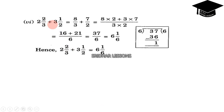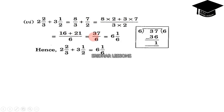Next: 2 and 2 by 3 plus 3 and half. Converting: 2 and 2 by 3 equals 8 by 3 (since 3 into 2 is 6, plus 2 is 8). And 3 and half: 3 into 2 is 6, plus 1 is 7, giving 7 by 2. LCM of 3 and 2 is 6. So 8 into 2 plus 7 into 3 gives 16 plus 21 by 6, which equals 37 by 6. Dividing 37 by 6, remainder is 1. So the result is 6 and 1 by 6.